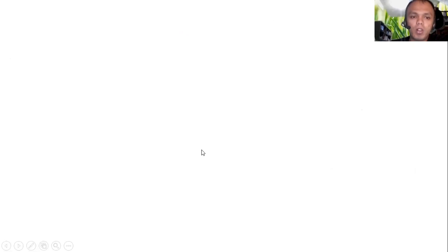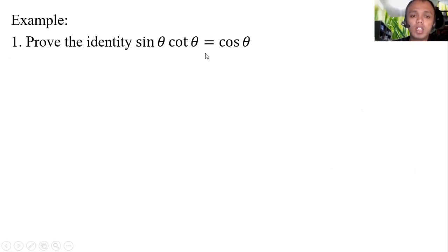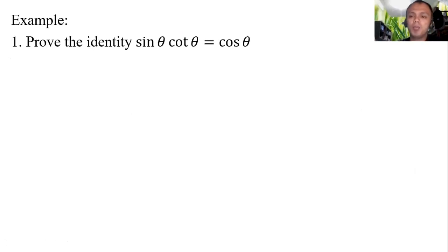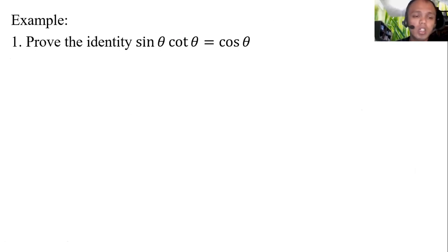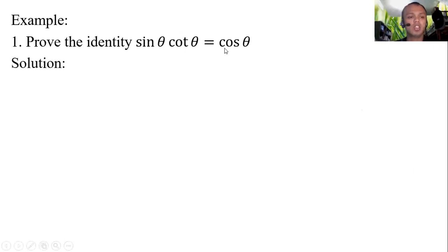Let us have an example. Prove the identity: sine theta times cotangent theta equals cosine theta. In this topic, we will prove given trigonometric expressions using the fundamental trigonometric identities. For number 1, we just have to prove sine theta cotangent theta is equal to cosine theta.